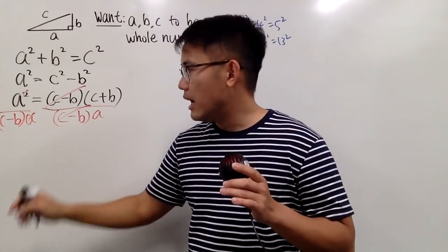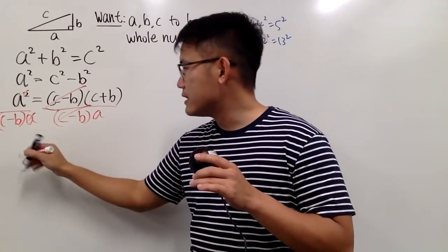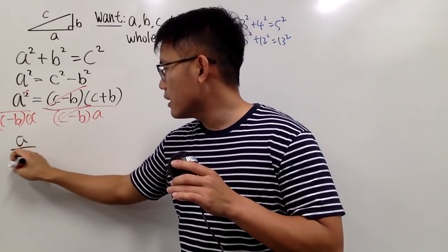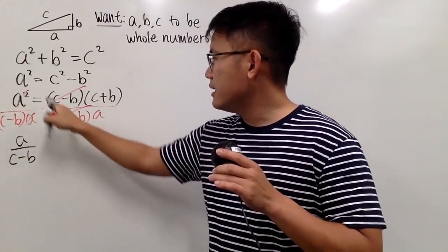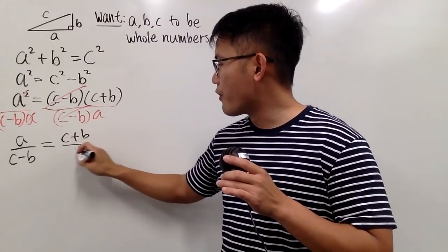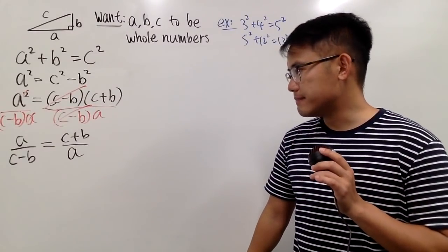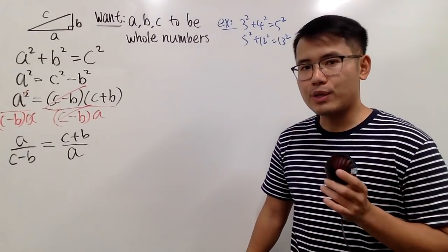Now, let's see. On the right-hand side, we have A over C minus B. And this is equal to the right-hand side is C plus B over A. So that's pretty nice. But what can we do next?